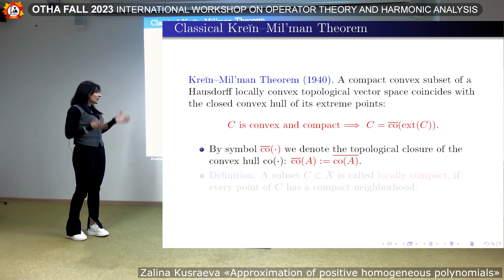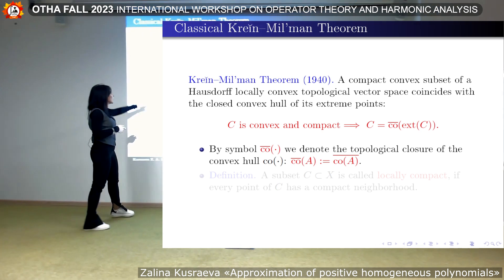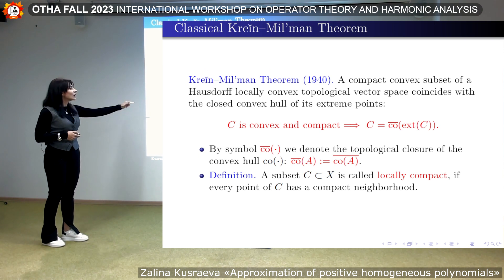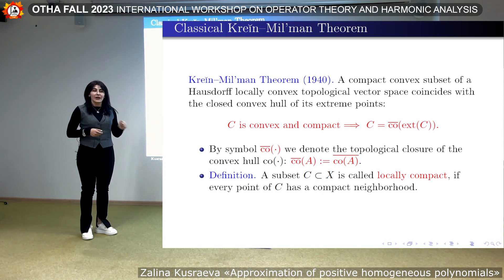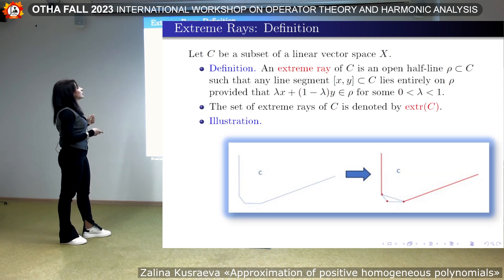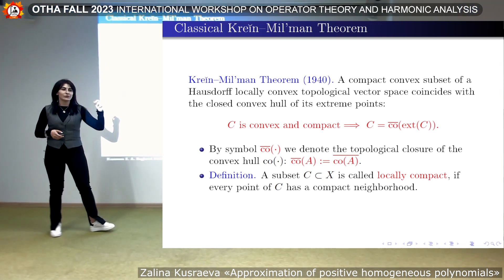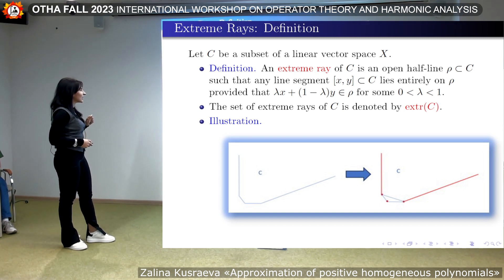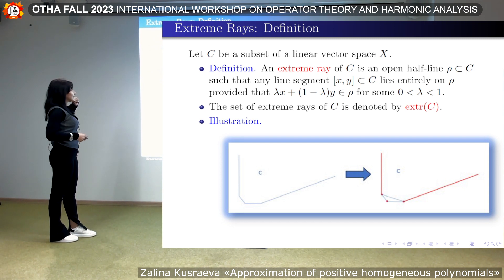A natural question arises: does this theorem remain true when the convex set is not compact, but locally compact — meaning every point of C has a compact neighborhood? It turned out that using only extreme points is not enough; something must be added to describe the space. Specifically, so-called extreme rays must be added. An extreme ray of a convex set C is an open half-line rho such that any line segment joining points x and y in C lies entirely on rho, provided at least one inner point of the segment x,y is in rho.